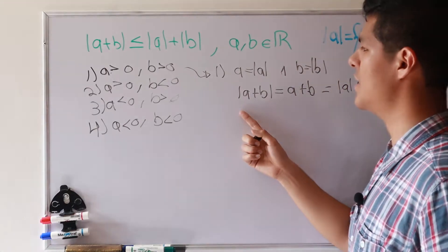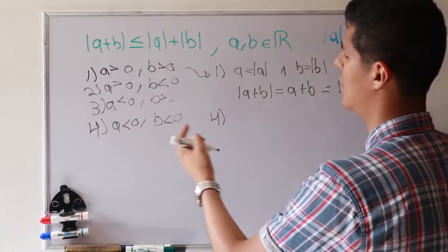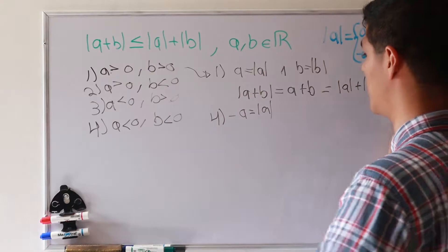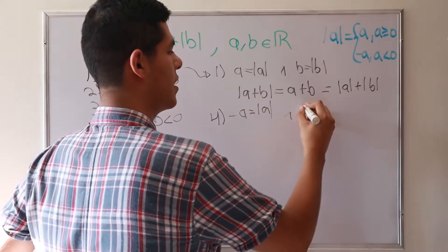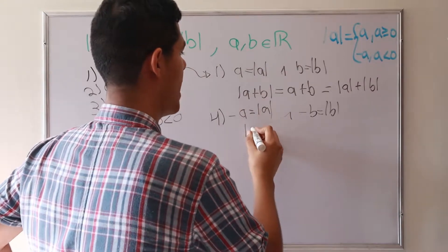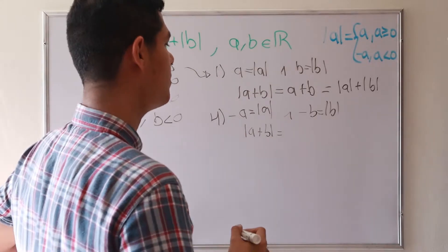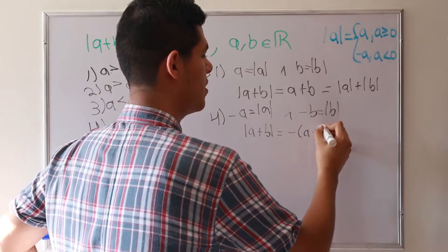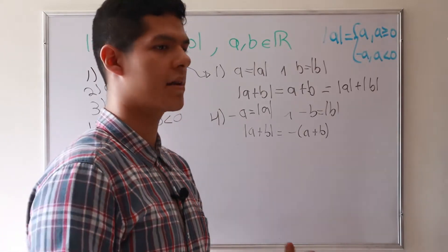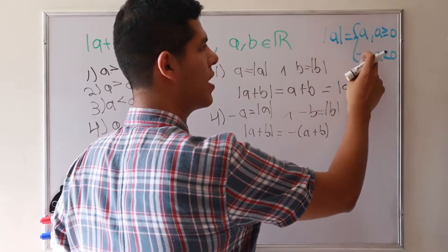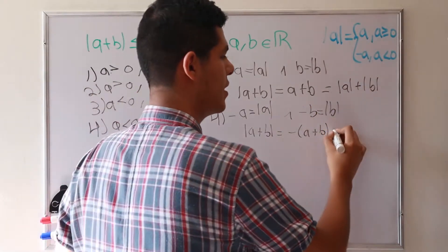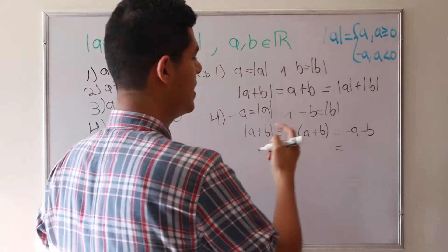Case four is also easy, because a is negative so minus a equals the absolute value of a, recalling the definition. Similarly, minus b equals the absolute value of b. So the absolute value of a plus b equals minus a plus minus b, which is minus a minus b. Since a plus b are both negative, the absolute value of a plus b is minus a minus b, which equals the absolute value of a plus the absolute value of b.